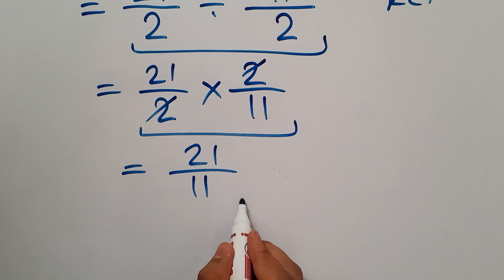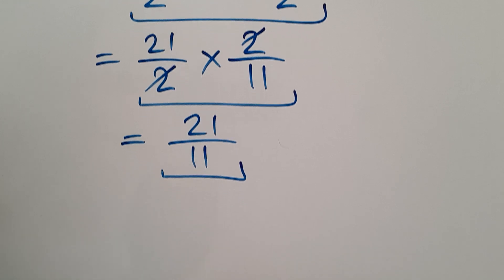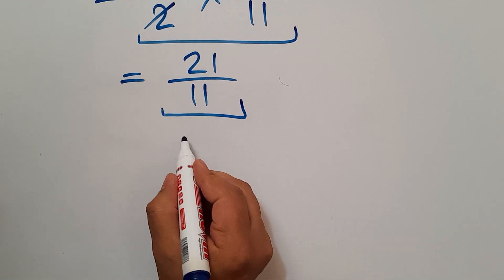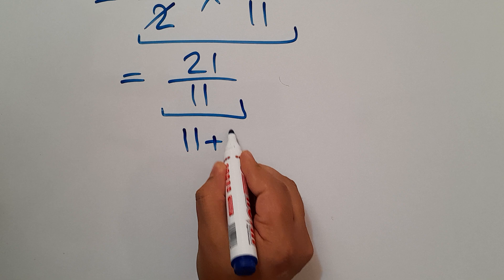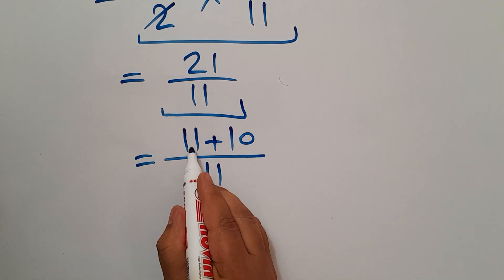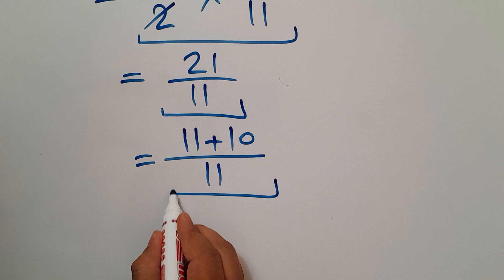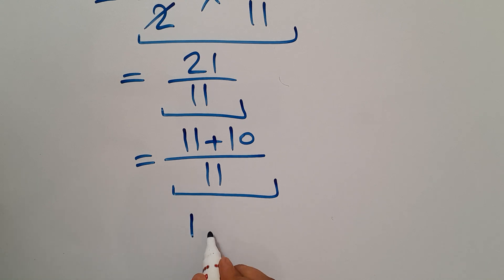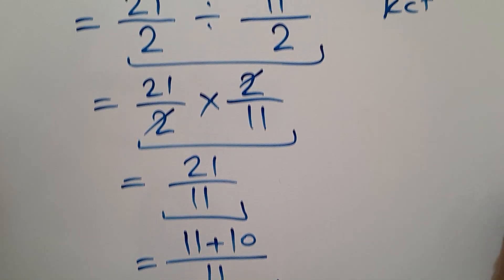Now let's convert this improper fraction to a mixed number. 21 can be written as 11 plus 10, so we have 11 plus 10 over 11. 11 divided by 11 gives us 1, so 1 and 10 over 11. So our final answer to this problem is just 1 and 10 over 11.